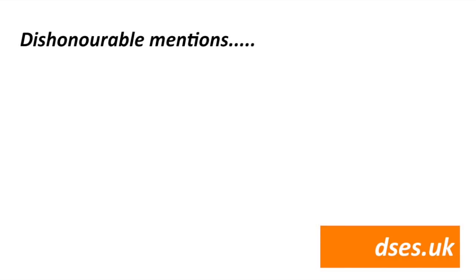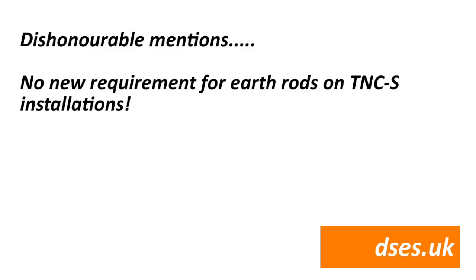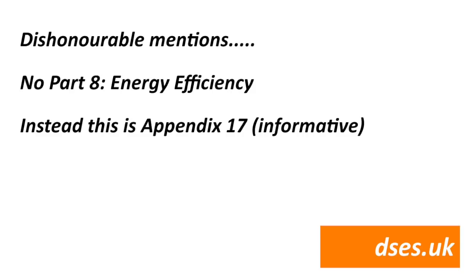You may have heard rumours about earth spikes being required for TNCS installations — thankfully that was dropped. There is no new requirement for earth rods in the 18th edition. It was such a ridiculous suggestion I honestly wonder if it was mooted as a red herring to detract from the other changes and give us all something to shout about. Originally there was also going to be a new Part 8 on energy efficiency, but this has instead been rolled into a new informative appendix — Appendix 17 — so 18th edition still has seven parts but now 17 appendices, with only Appendix 1 being normative. You can expect to see Appendix 17 become Part 8 when IET and BSI feel like sending us all new books. Appendix 17 covers energy efficiency, lighting controls and voltage drop versus cable size.